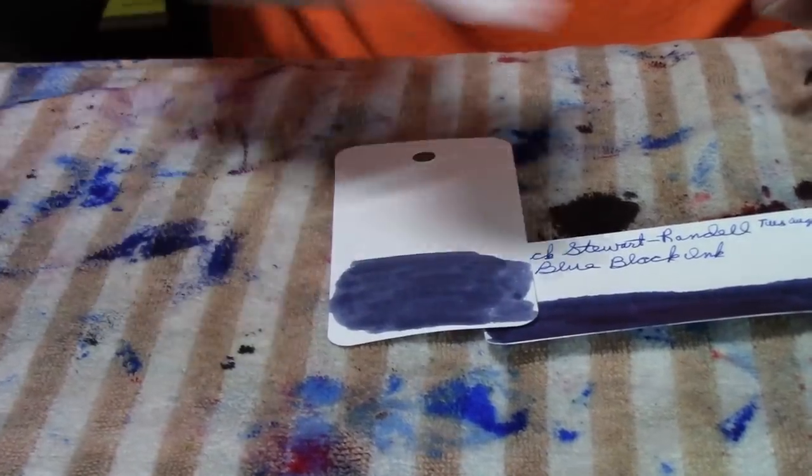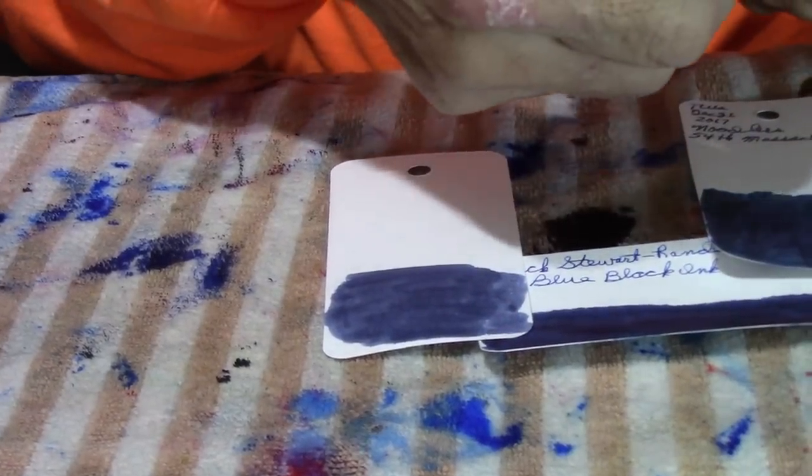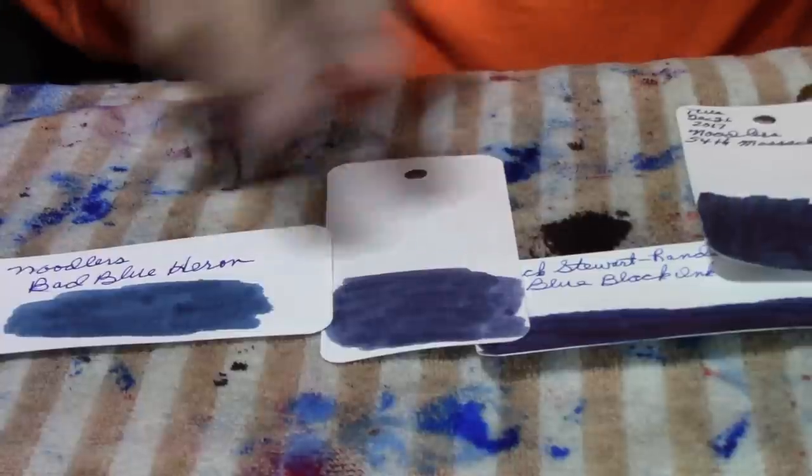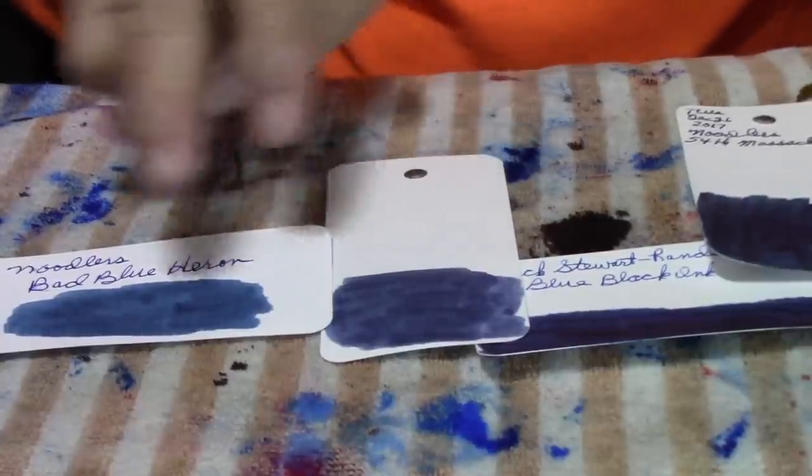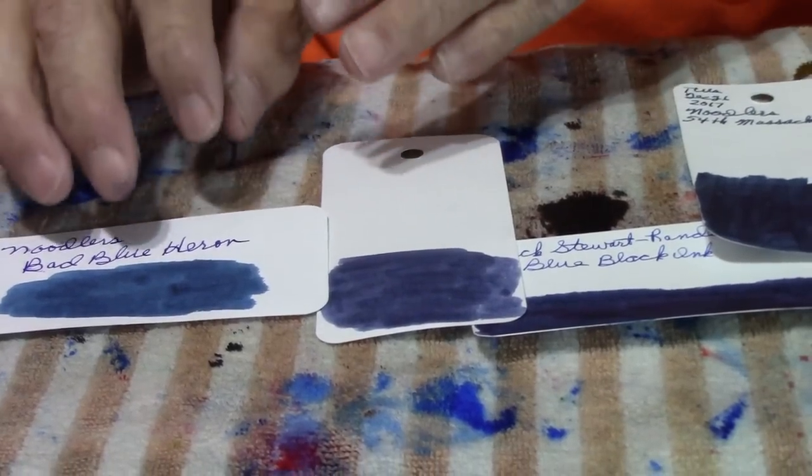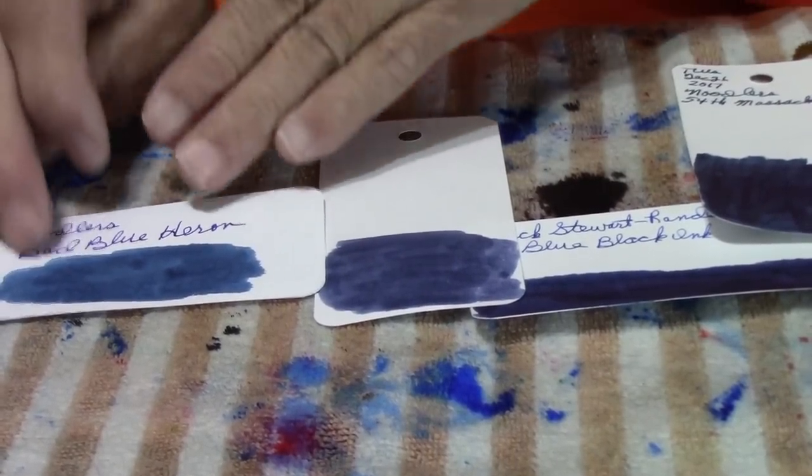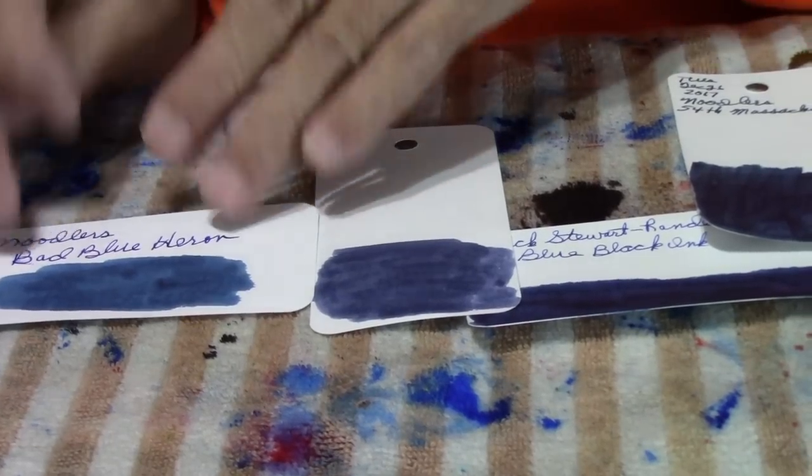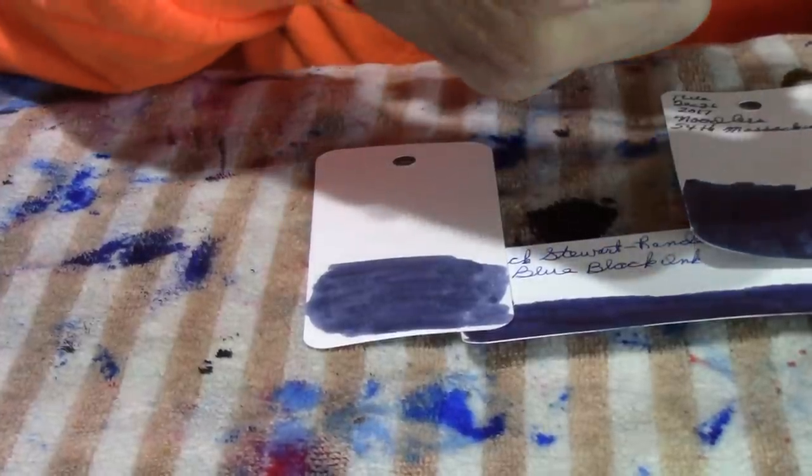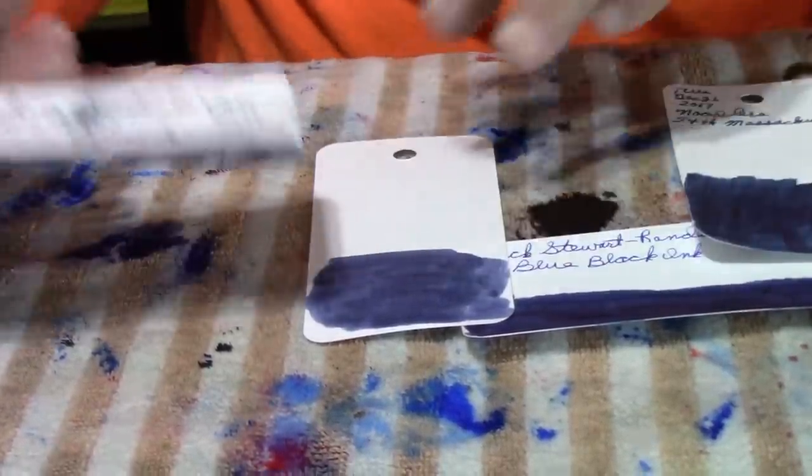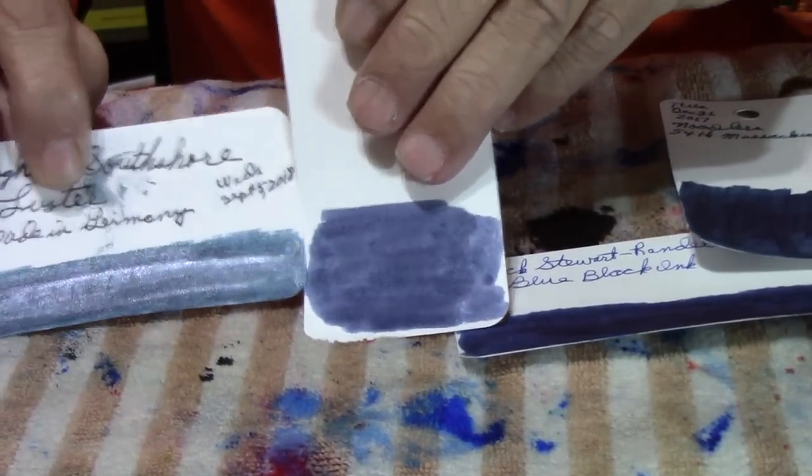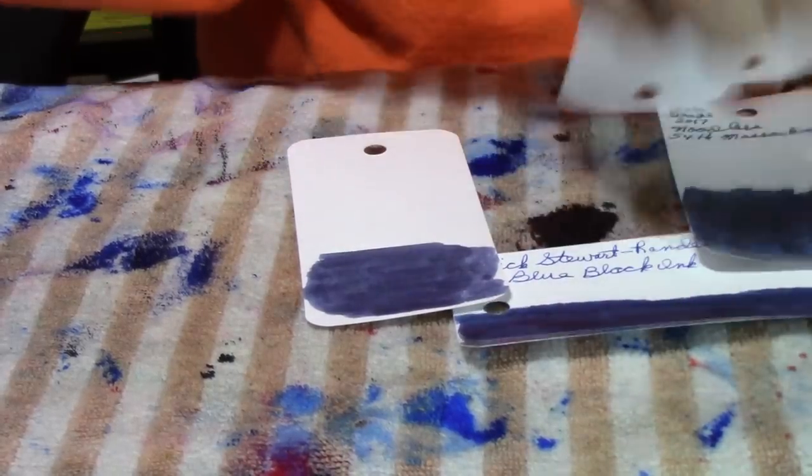And then here's the Noodler's Bad Blue Heron. No, not really, but it kind of reminds me of it, but it's not really as pronounced in the Bad Blue Heron. Last but not least, here's the Birmingham South Shore Luster. You can see that. So, those are what I have I thought I'd share with you now.